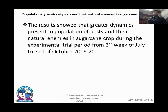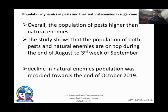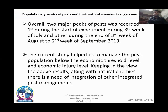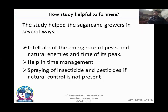The results showed that greater dynamics are present in the population of pests and their natural enemies in sugarcane crop during the trial period from the 3rd week of July. Overall, the population of pests is higher than natural enemies. Both pests and natural enemies peaked during August, and the natural enemy population declined toward the end of October. Two major peaks of pests were recorded: during the 3rd week of July and during the end of the 3rd week of August to the 2nd week of October.